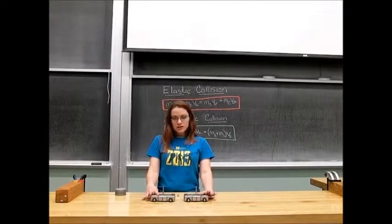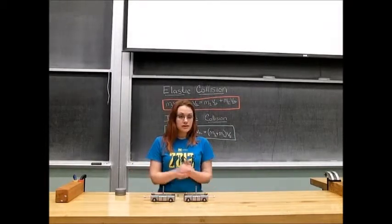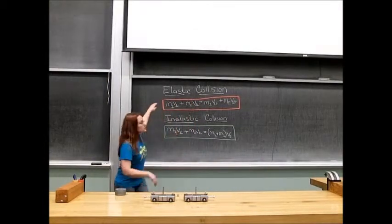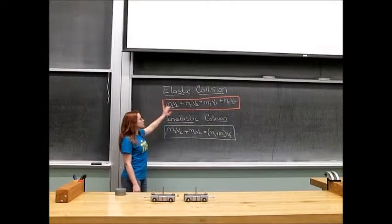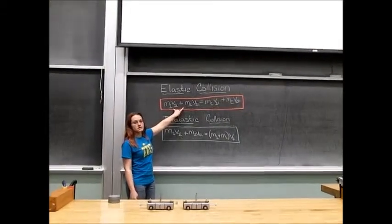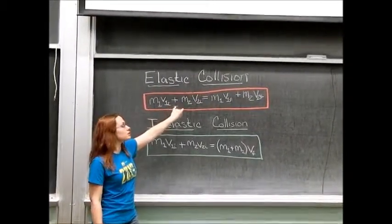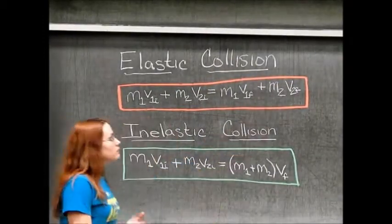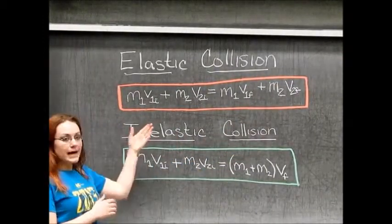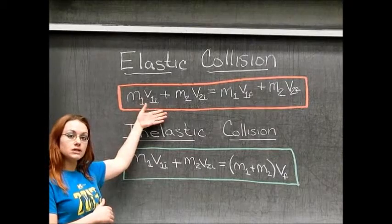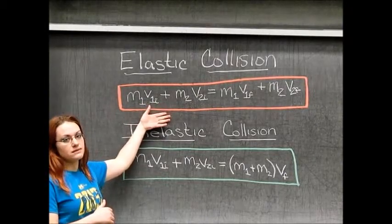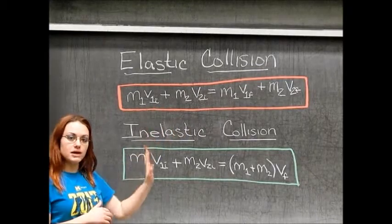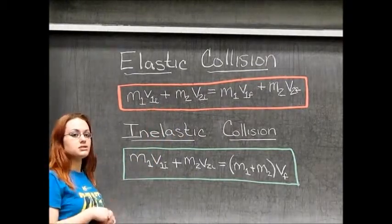This demonstration illustrates different types of collisions. There are two basic types. There are elastic collisions where you have two objects that collide, and after the collision they are still two separate objects. We will observe what happens when the mass of these objects are equal, and then what happens when the mass of these objects are not equal, while one cart is kept at rest and the other cart is propelled into it.